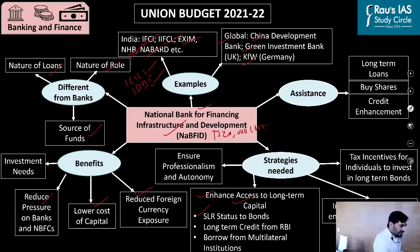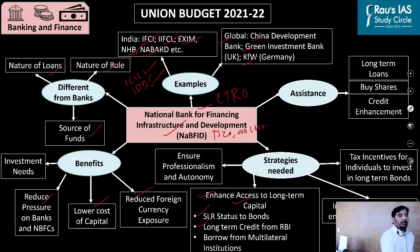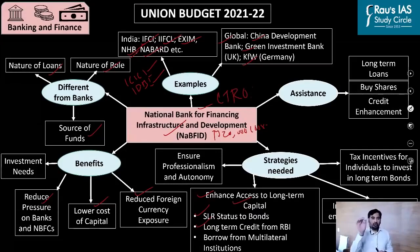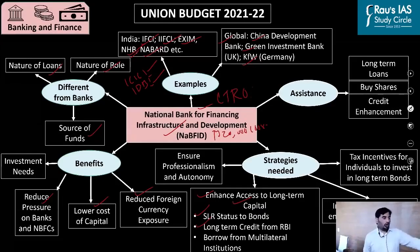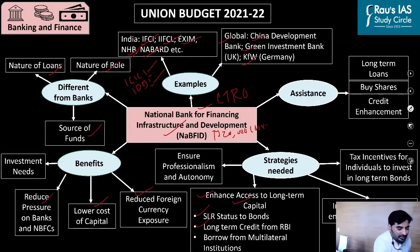The second measure is long-term credit from the RBI. The RBI is presently using LTRO — Long-Term Repo Operations — to infuse long-term credit into the Indian economy. This LTRO window should also be made available to development banks. Lastly, development banks should be allowed to borrow from multilateral institutions.